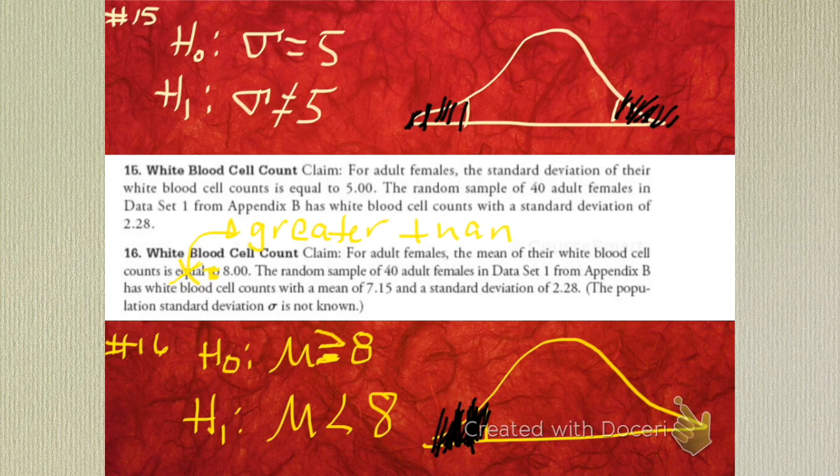And that's how you set up your null and your alternative. The hard part is the start. There's also a little summary about confidence intervals.